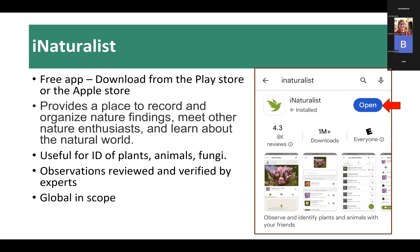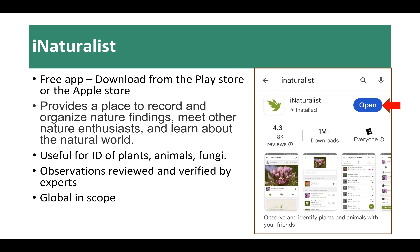There's a natural flow from Merlin into iNaturalist, as they share a lot of the same attributes. iNaturalist is a very powerful and useful tool, also available as a free app from the Play Store or Apple Store. It provides a place to record and organize all your nature findings — you can meet other nature enthusiasts, learn about the natural world, and interact with experts in various fields. A key strength of iNaturalist is that it's not just for birds — it's useful for plants, animals, and fungi. It's very wide-ranging. Observations you load through the app are reviewed and verified by experts, who can help identify species you're not sure of and sometimes offer corrections.